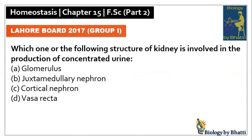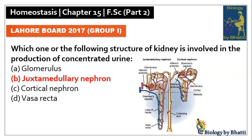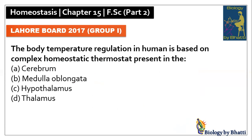Lahore Board 2017 Group 1: which one of the following structures of the kidney is involved? In this paper, the body temperature regulation in humans is based on a complex homeostatic thermostat present in the hypothalamus, so the answer was C option.